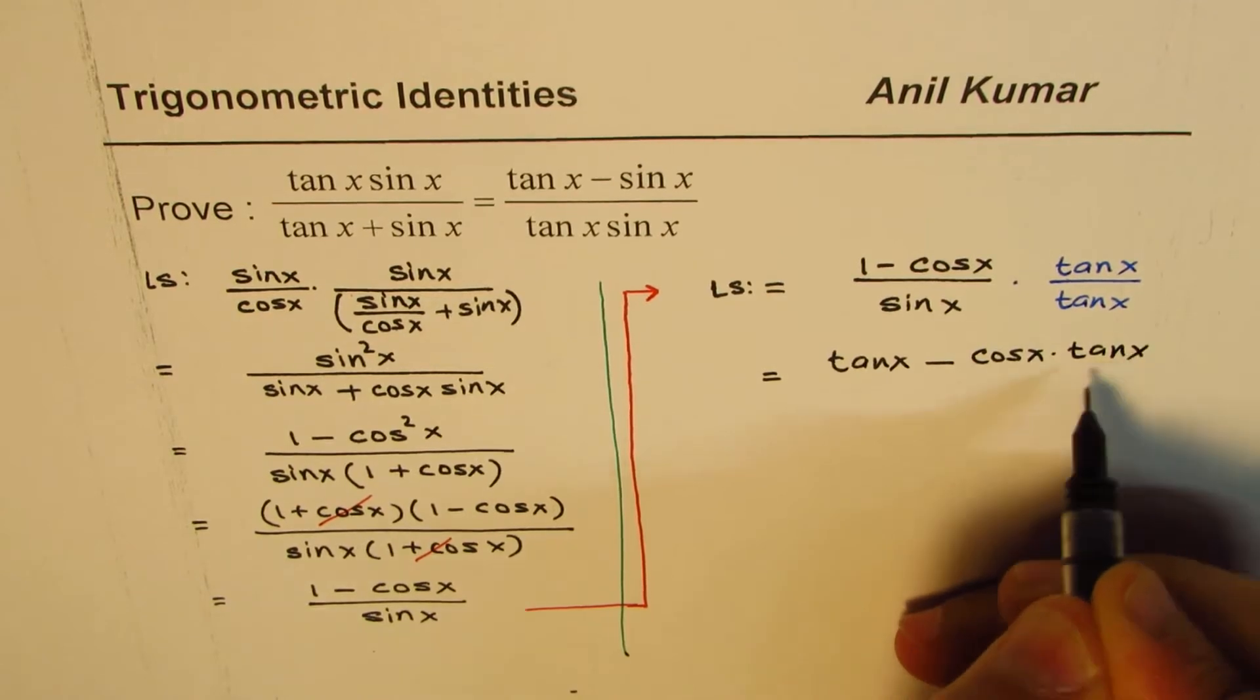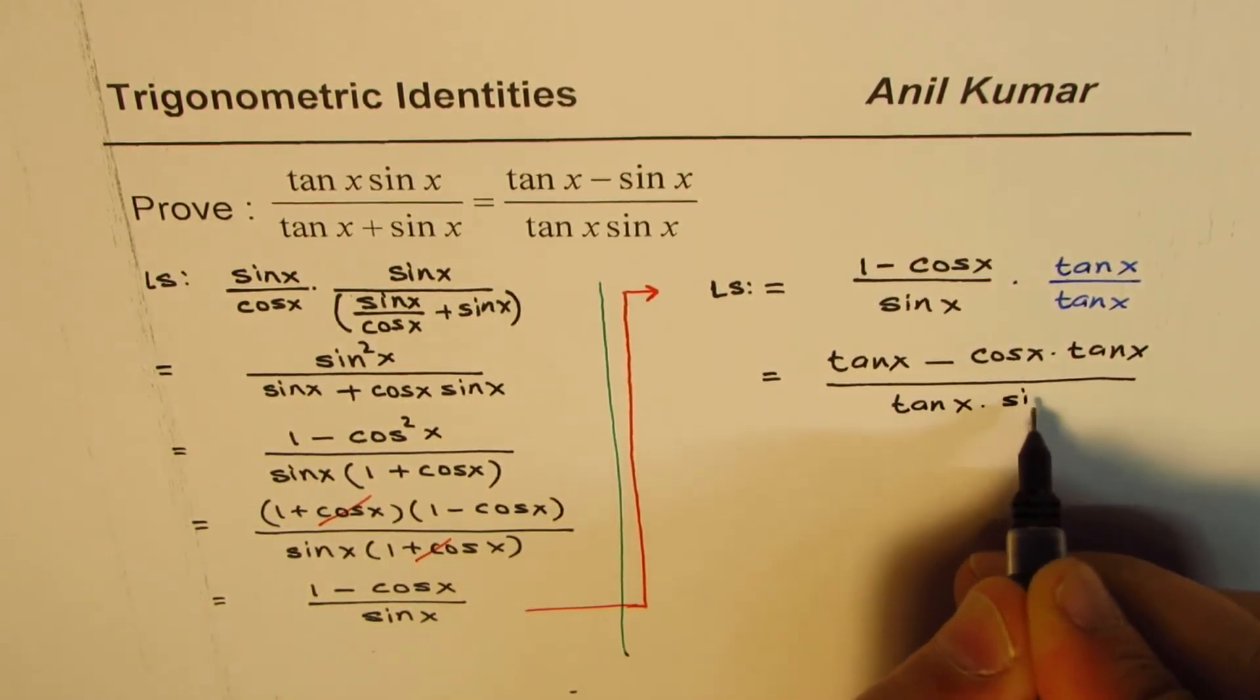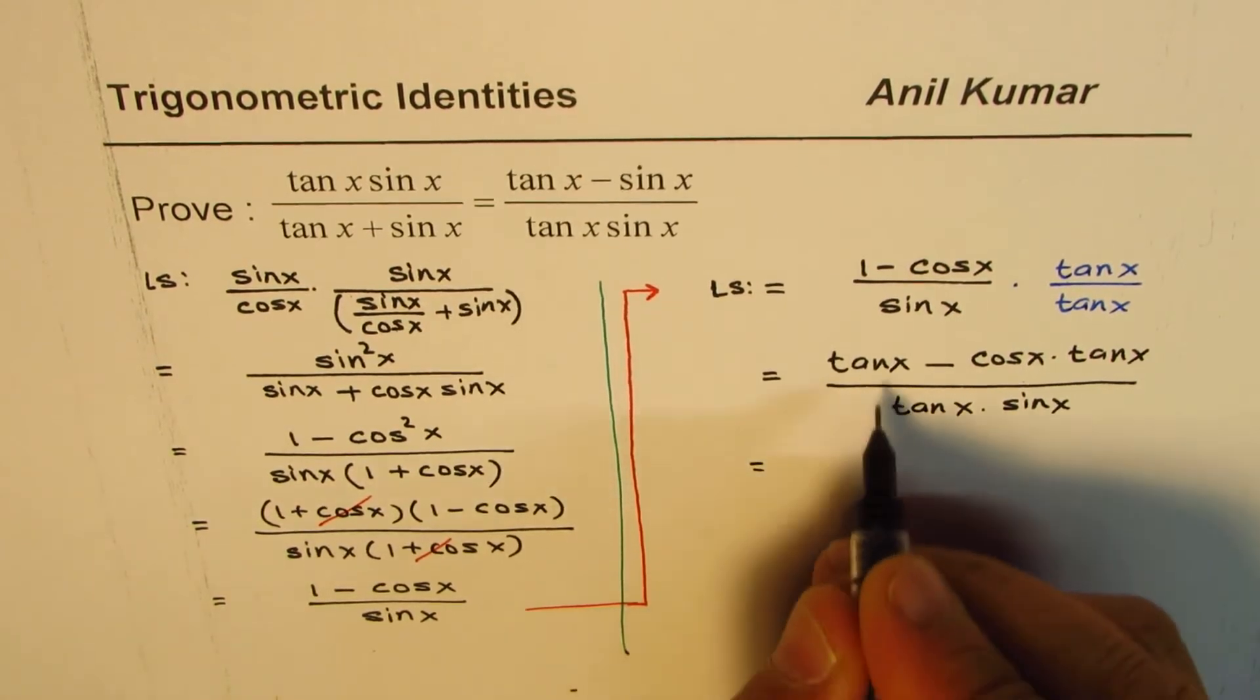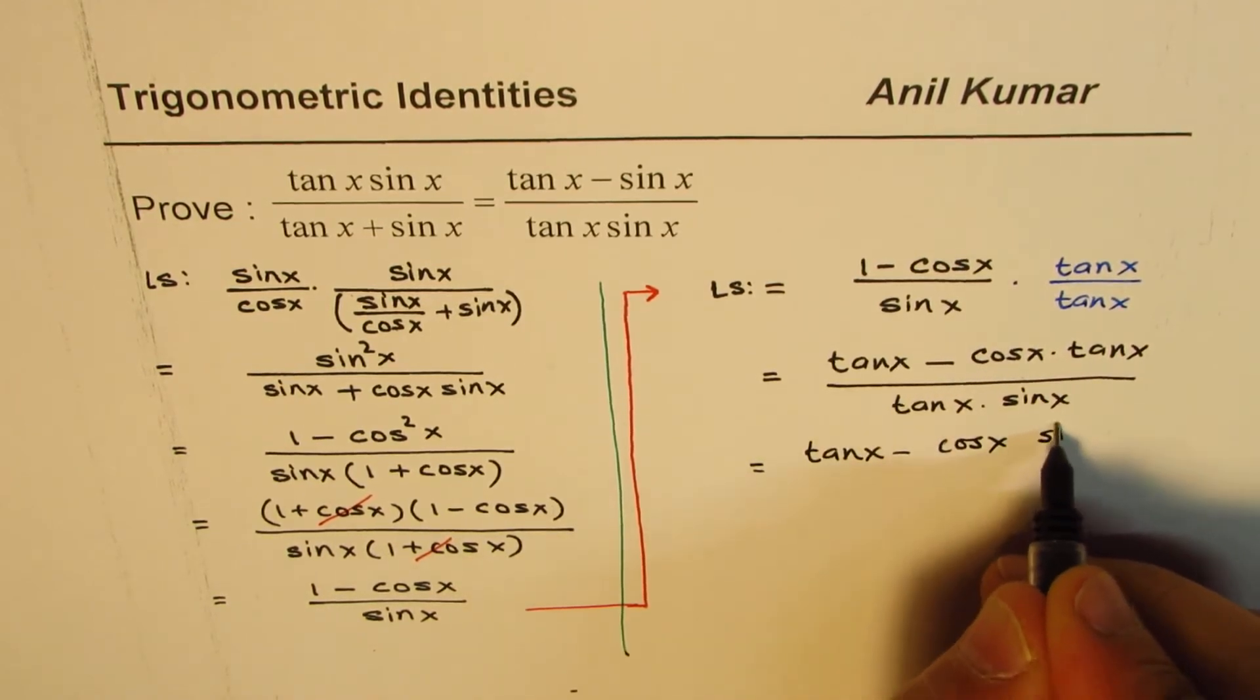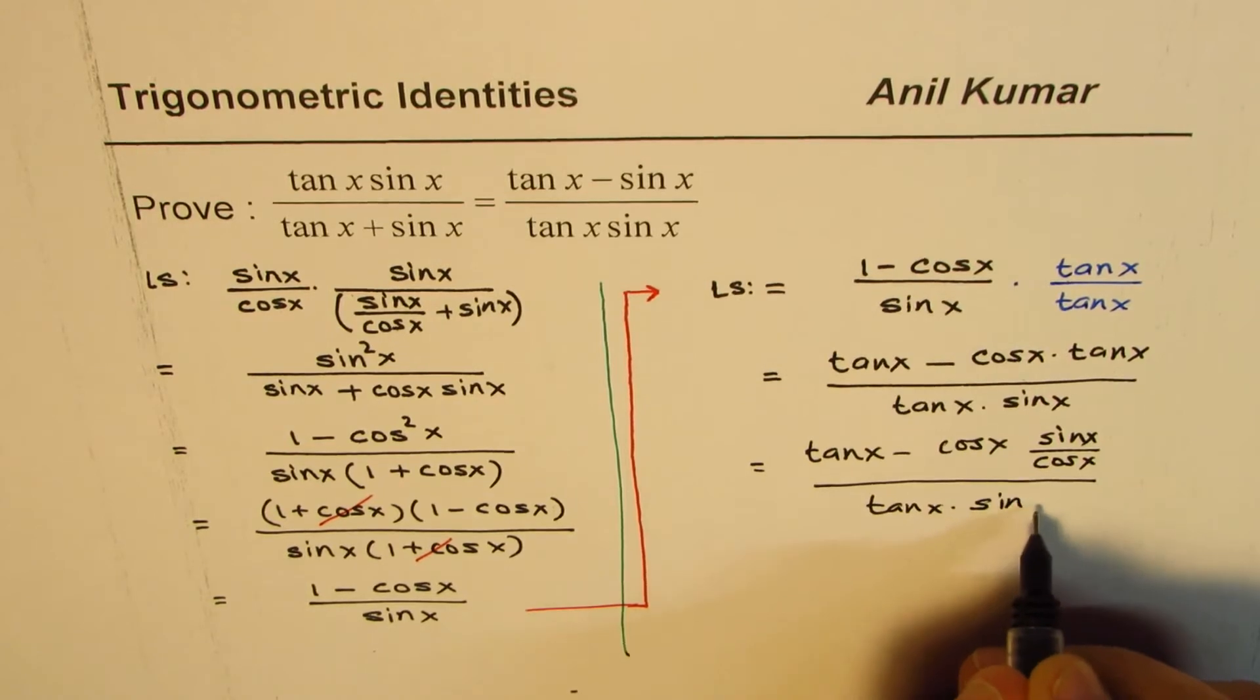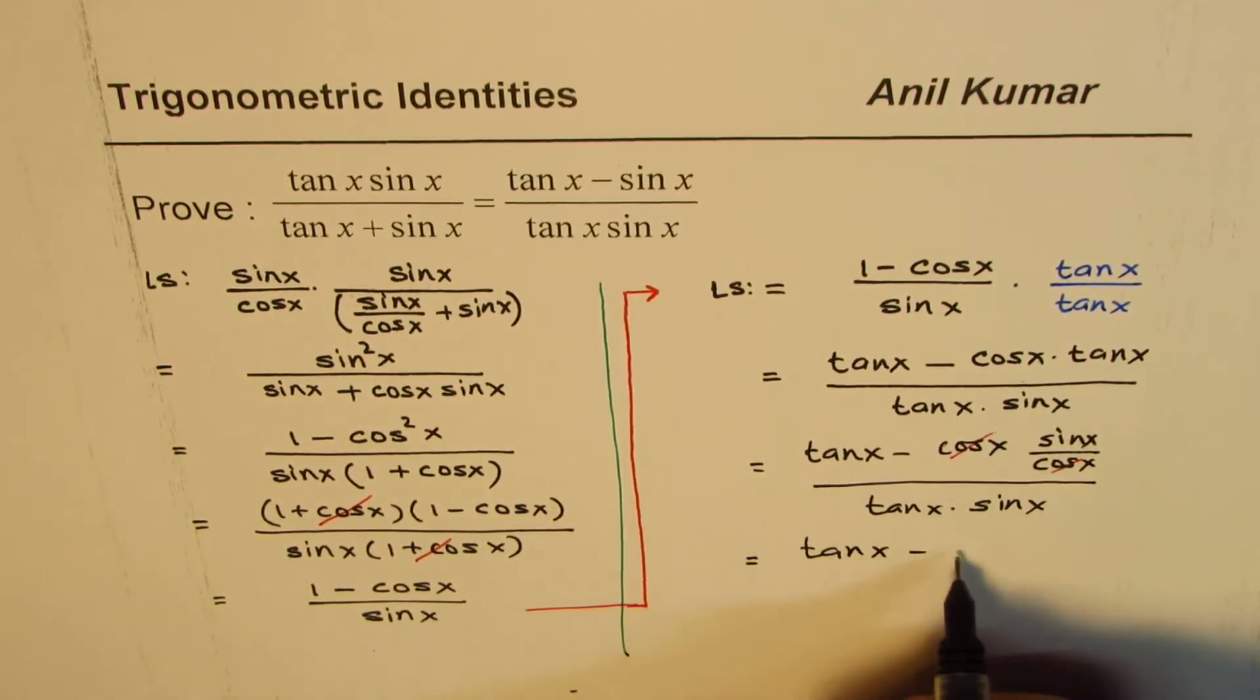If you do that, what do you get? You get tan x times 1, which is tan x minus cos x times tan x, that's the numerator, and denominator is tan x times sine x. We could write this as tan x times sine x. We got the denominator part. Cos x times tan x is sin x, divided by tan x times sin x.